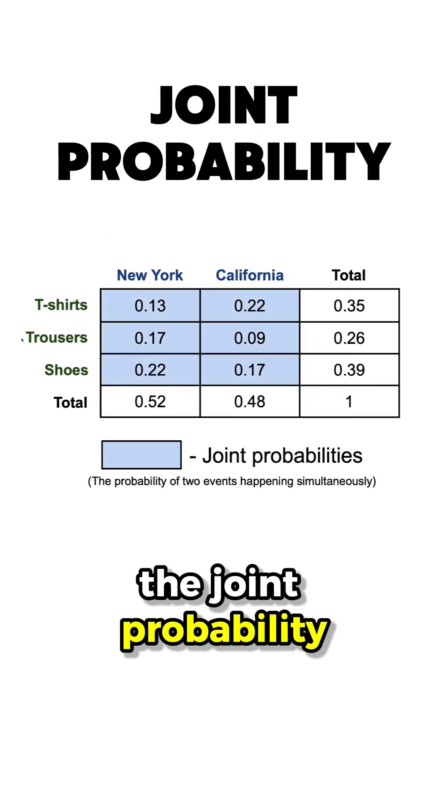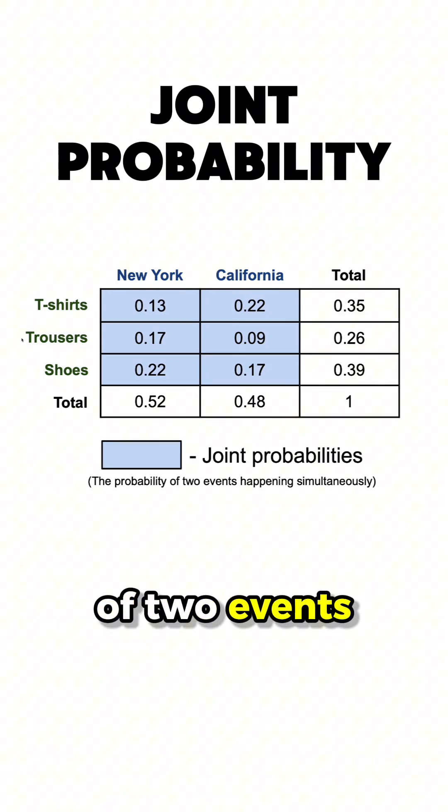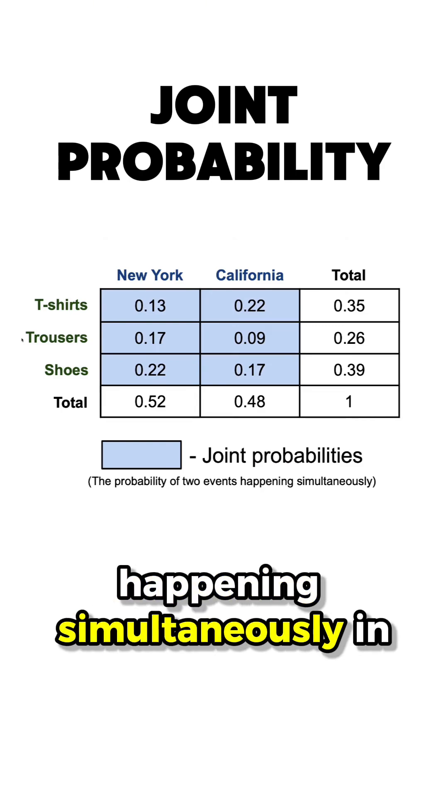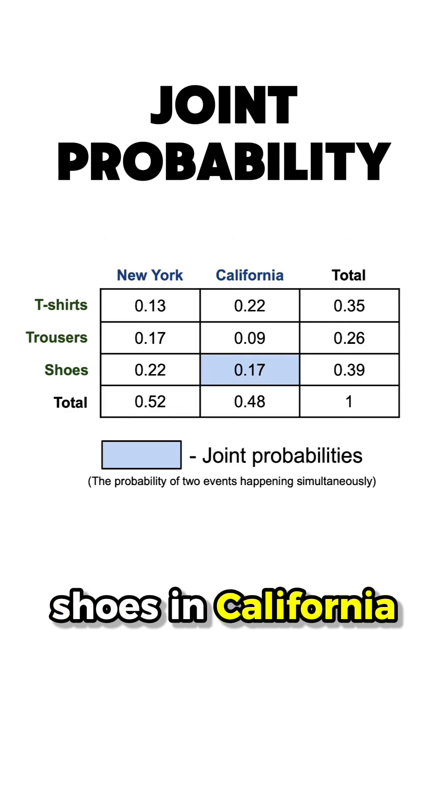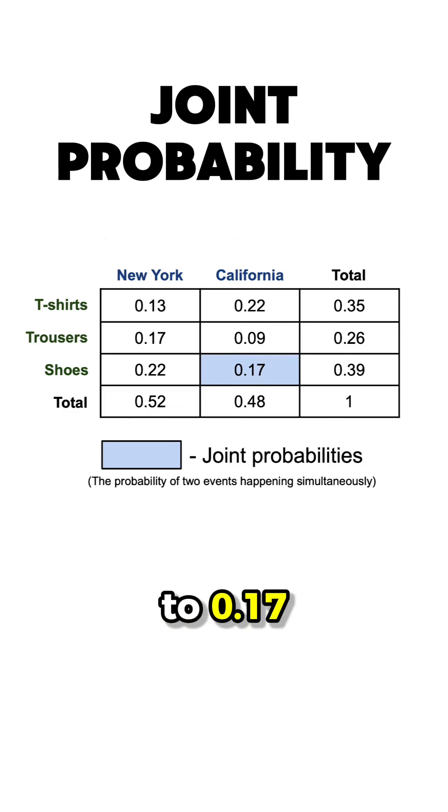The joint probability measures the likelihood of two events happening simultaneously. In our example, a joint event could be that of selling a t-shirt in New York, which is equal to 0.13, or selling some shoes in California, which is equal to 0.17.